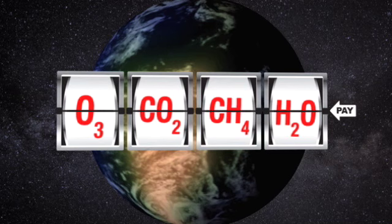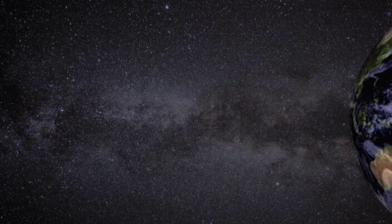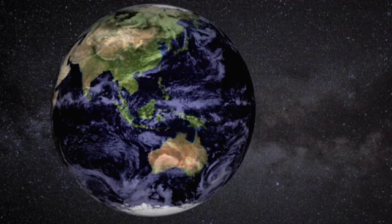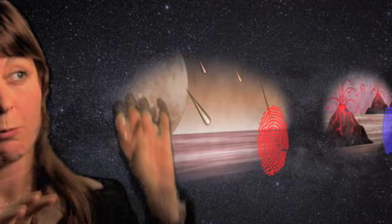But a planet doesn't have to have all of these chemicals for life to exist there. Life here on Earth has changed over billions of years, and the chemicals in our atmosphere have changed with it. If you have a look at our own Earth, you have six different kinds of fingerprints from when the Earth was really very young to where we are right now.